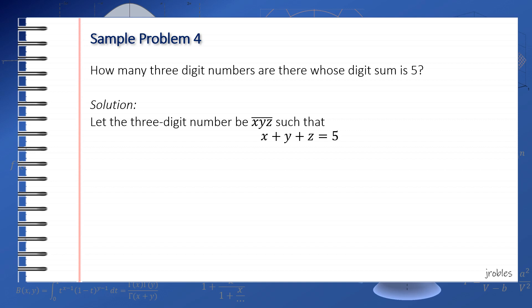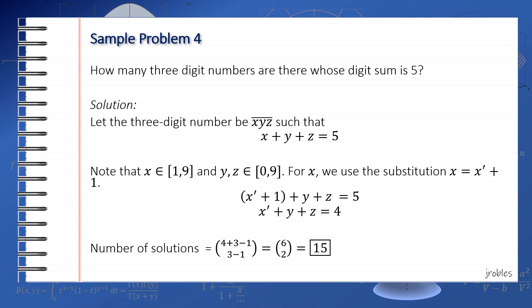For this one, we shouldn't use stars and bars immediately since the value of x cannot be 0. Otherwise, the number will be a two-digit number. Similar to the previous problem, we use the substitution x = x' + 1. The equation then becomes x' + 1 + y + z = 5, which simplifies to x' + y + z = 4. By stars and bars, the number of solutions is equal to C(4+3-1, 3-1) or C(6,2).